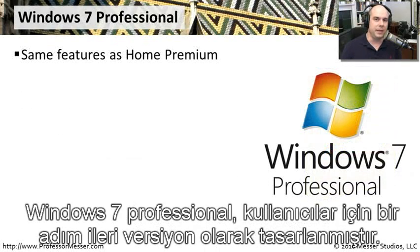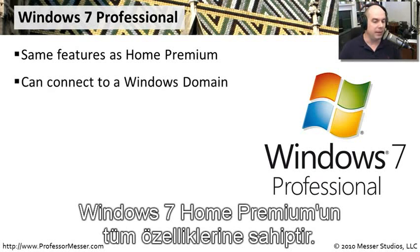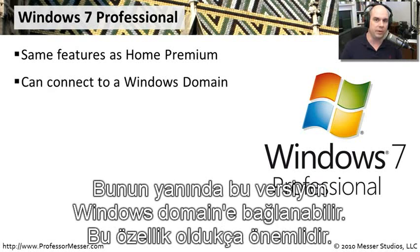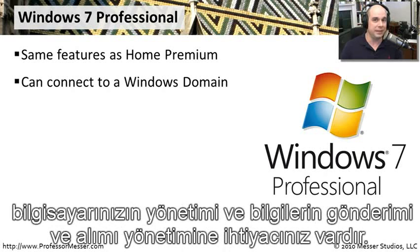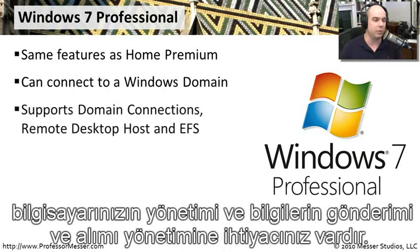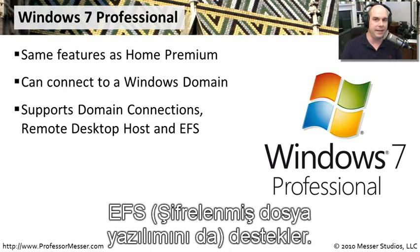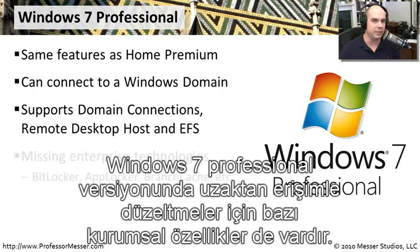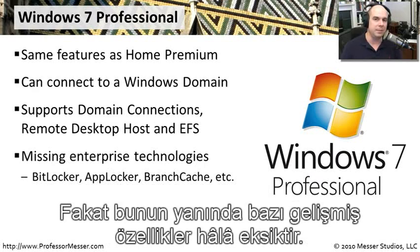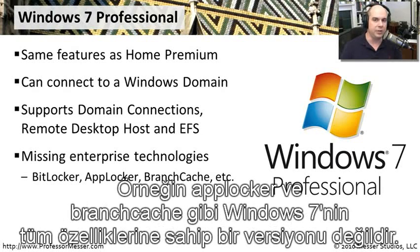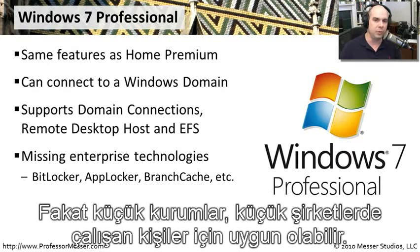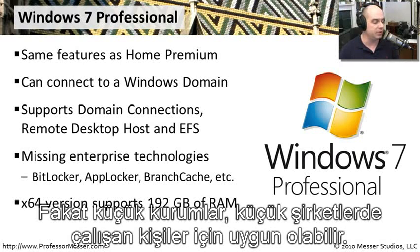Windows 7 Professional is designed as one step above the consumer version. It has all the capabilities of Home Premium but can actually connect to a Windows domain — important when your computer needs to be managed and share information with that domain. It also supports remote desktop host and EFS for encryption and remote access. However, it's still missing some advanced features like BitLocker, AppLocker, and BranchCache, though it fits most business and small enterprise environments.